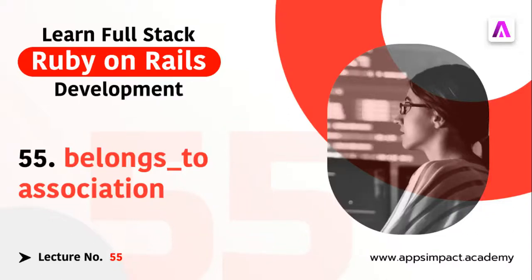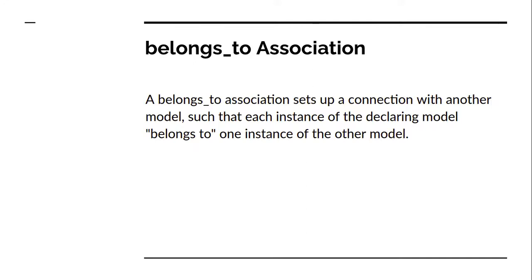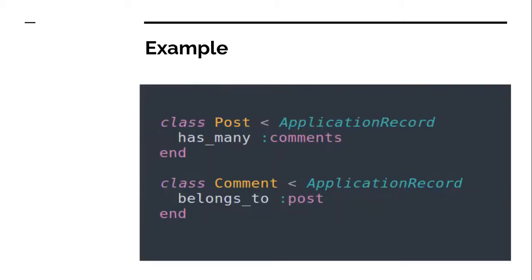Welcome back, this is lecture number 55 from our bootcamp series. In the last lecture we discussed has_many association, and in this lecture we will discuss belongs_to association. A belongs_to association sets up a connection with another model such that each instance of the declaring model belongs to one instance of the other model. Using the post and comment example, every instance of the comment model must belong to some instance of a post model.